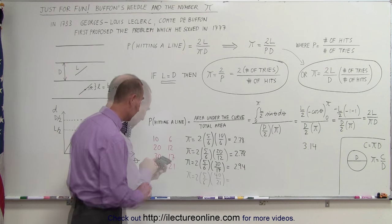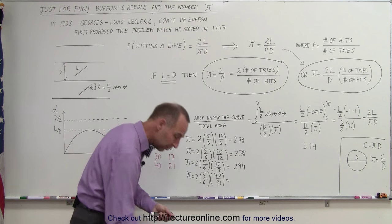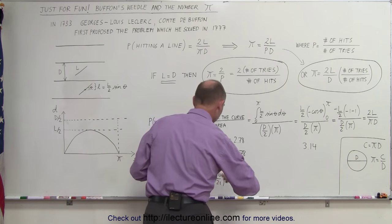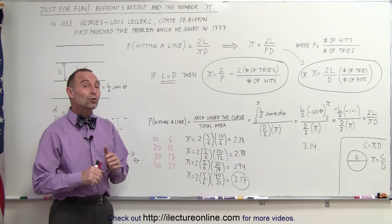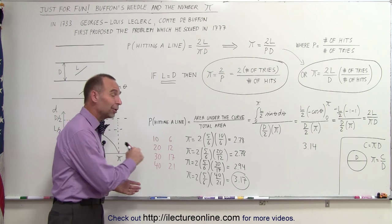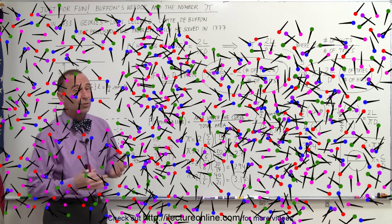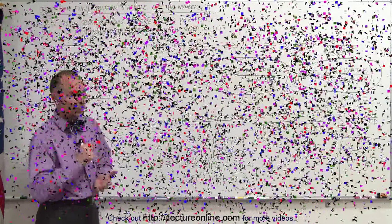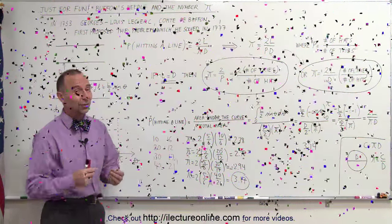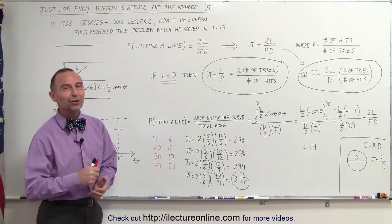How about the fourth trial? And then we get 3.17. Notice that we're just using 40 needles, we got a pretty decent result. Very interesting. Maybe with 100 needles or 500 needles or 1,000 needles, you would get a really accurate result. Notice this is just another clever way of finding the number pi.